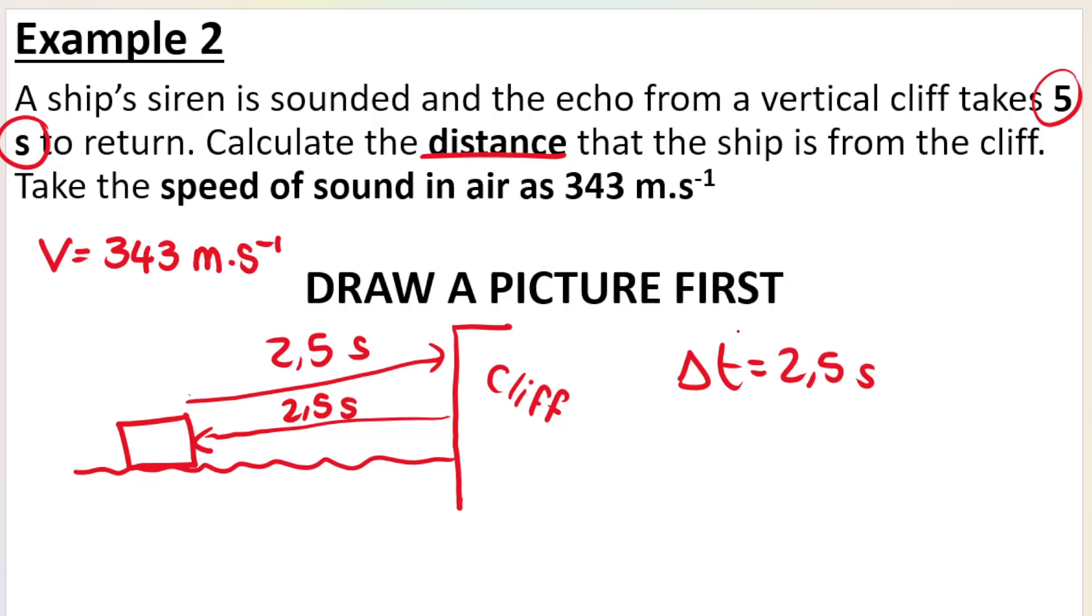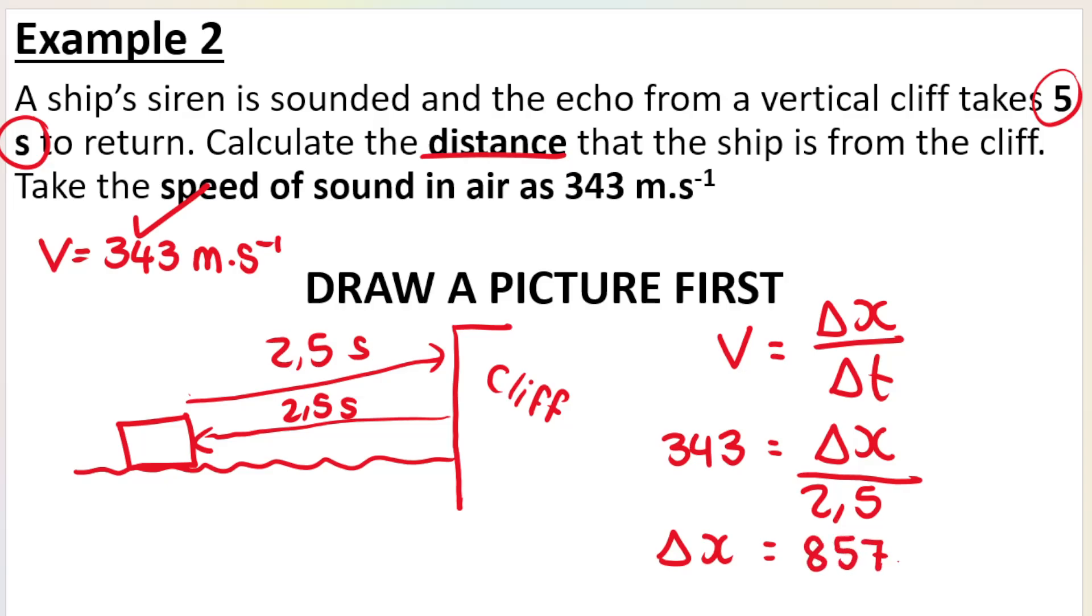I've got my time, I've got my speed. How do I work out my distance? My formula is speed equals distance divided by time. So my speed is 343 meters per second. My distance is what I'm looking for, and my time is 2.5 seconds. So when I work that out, I get my distance as being 857.5 meters. What that means is from the ship to the cliff is 857.5 meters.